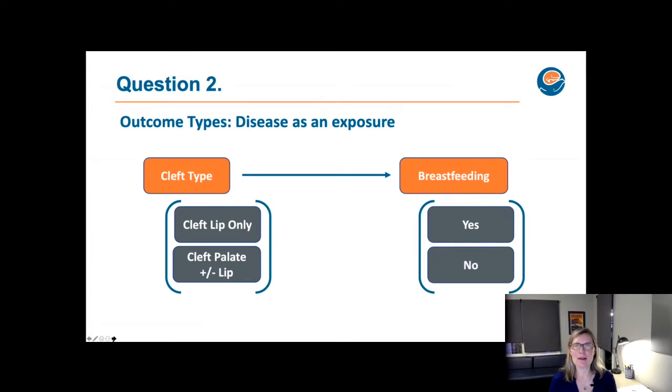So another example of outcomes to consider is sometimes our disease state is confused for being the outcome when it's not. And I think this is a nice example of that. So our outcome in this case is breastfeeding, whether or not, say at a particular age, like one month of age, a child is breastfeeding, yes or no. And we want to know that according to whether or not they're in one of two groups, if they have a particular phenotype, which is cleft lip only, or if they have a cleft palate with or without cleft lip involvement. And so in this case, our disease is our exposure of interest. And we're then looking at our outcome, which is actually breastfeeding at one age. So just because you have a condition doesn't mean that that is your outcome. And it's important to think through what the particular question is that you're trying to ask to make sure that you know what your outcome is.